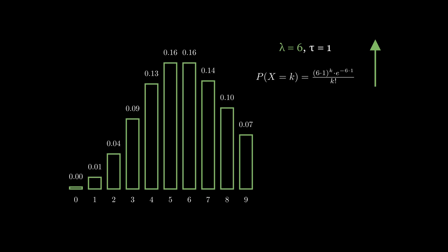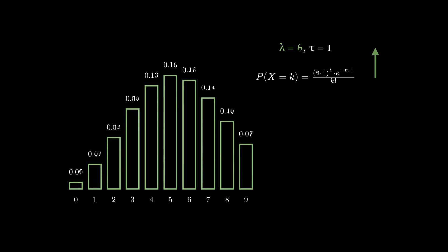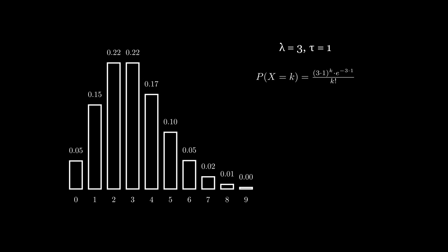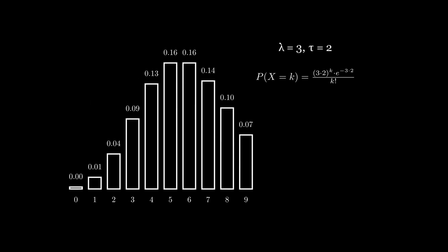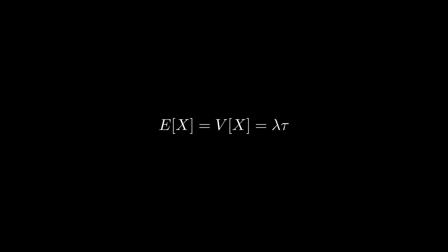So far, we've only altered the lambda value. We can also adjust the tau value, which is the time period we're considering. The current distribution shows the probability of k successes occurring during one time period. If we increase tau to two, we see the probability distribution of k successes occurring during two time periods. Now that we have an appreciation for the shape of the Poisson distribution, let's quickly touch on its mean and variance. Interestingly, the mean and variance of the Poisson distribution are the same and are both equal to lambda times tau.